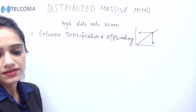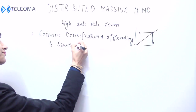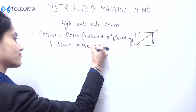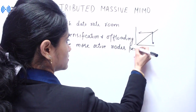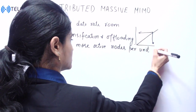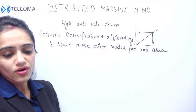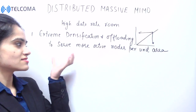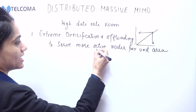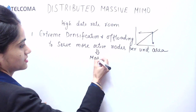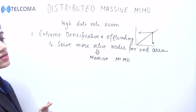Extreme densification and offloading allows us to serve more active nodes per unit area. This concept is closely related to what we call Massive Multiple Input Multiple Output — Massive MIMO.